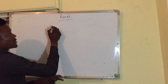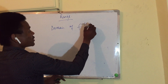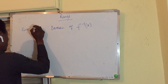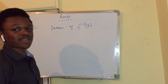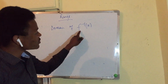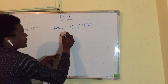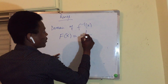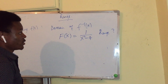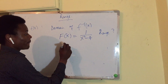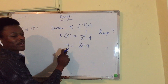Now let us talk about range. The domain of f⁻¹(x) is the range of f(x). So I can find the inverse of a function and then find the domain of the inverse, which gives me the range of the original function. Let us solve this: f(x) = 1 / √(x² - 4). Find the range.